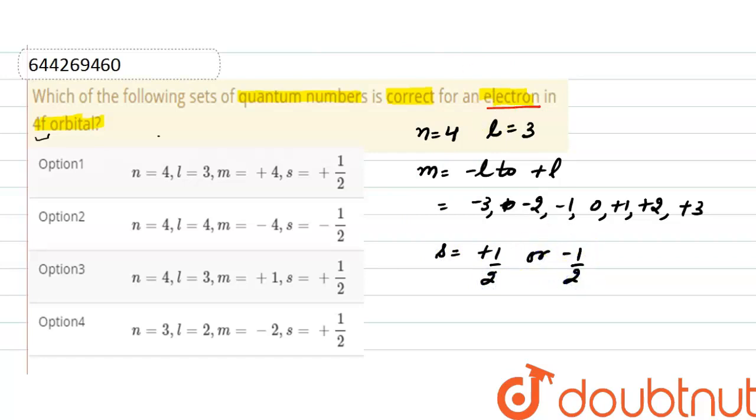Now we'll check the options given. The value of n is 4, correct. In option 2 it is correct and 4 it is correct. In option 4 the value of n is 4, that is why option 4 is incorrect.